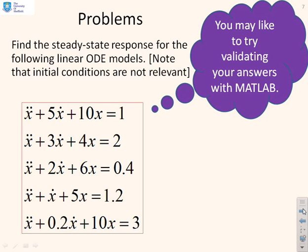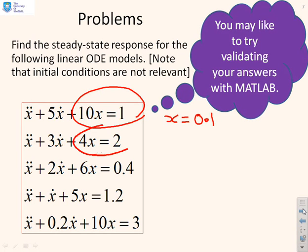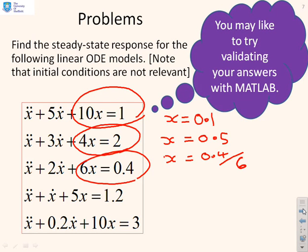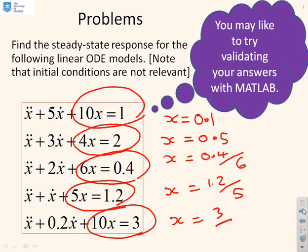Some questions: can you find the steady state positions for these differential equations? A suggestion is to validate your answers in MATLAB to build confidence that the response settles where you expected. The answers are straightforward: 10x = 1 gives x = 0.1; 4x = 2 gives x = 0.5; 6x = 0.4 gives x = 0.4/6; 5x = 1.2 gives x = 1.2/5; and 10x = 3 gives x = 3/10. It's very simple to calculate the steady state position, assuming the underlying signals are convergent.